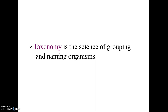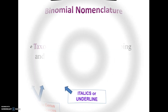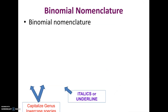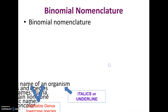First of all, just a little background very quickly. Taxonomy or classification is the science of grouping organisms, grouping them and naming them. We covered this at the beginning of the year. Every living thing has a scientific name, and that's called binomial nomenclature. That consists of their genus and their species.